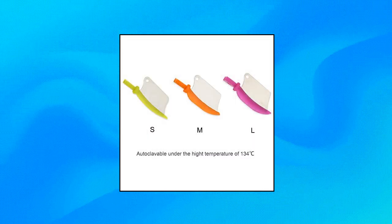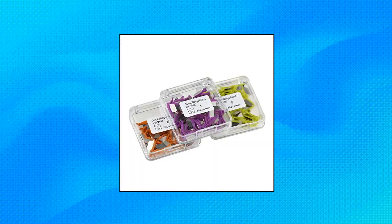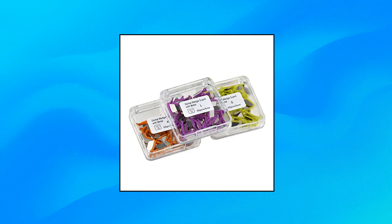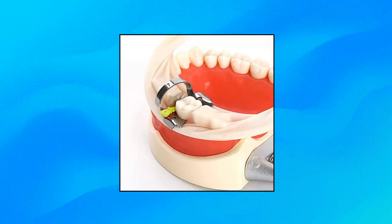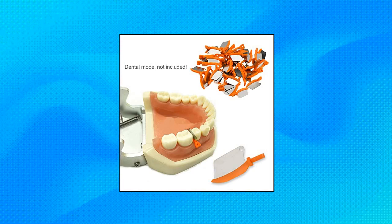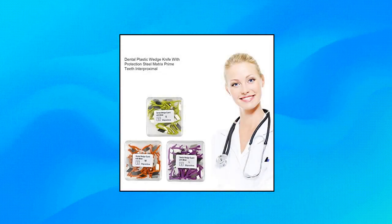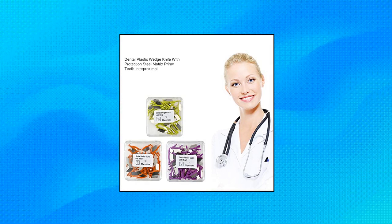Damuse Orthodontic Matrix Wedges Dental Prime Teeth Interproximal Wedge Guard with Metal Plastic Wedge Knife with Protection Dental Steel. 3 Box 50 Pieces per Box. 100% Brand New High Quality Plastic Wedge, and you may receive different packages. Medical Material Dental Filling Auxiliary Tool. Dental Wedge Knife is specially designed to protect the clinical teeth and deciduous teeth. Three sizes.